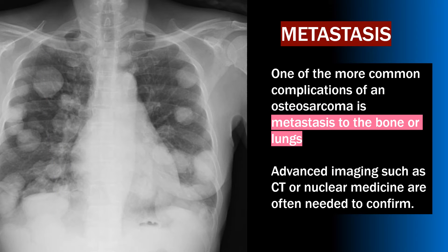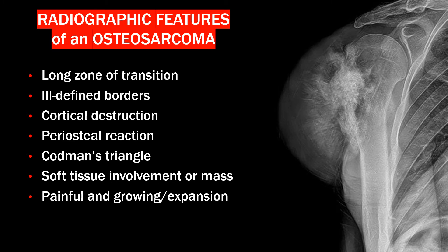One of the more common complications of osteosarcoma is the potential for metastasis to the bone or lungs. Advanced imaging such as CT or nuclear medicine are often needed to confirm and rule out metastasis. Radiographically, osteosarcomas present with aggressive findings — not all of these need to be present; just one may be enough to require follow-up or further imaging.